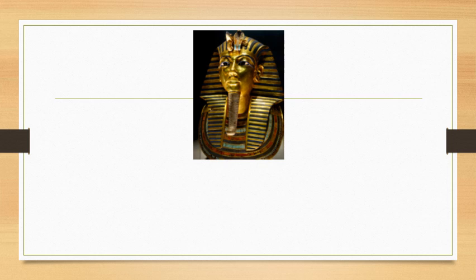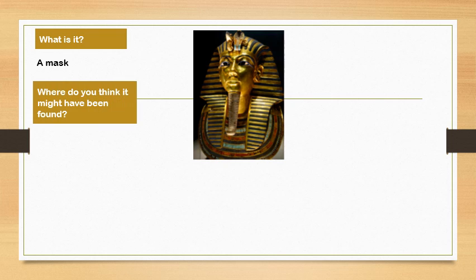Let's have a closer look at this. What is it? So I have looked very carefully and predicted that it is a mask. I've thought it is a mask because it has features of a face on there — there's eyes, there's a nose, there's a mouth. It looks like something that you could wear on your face or on your head. So a mask — that's my prediction.